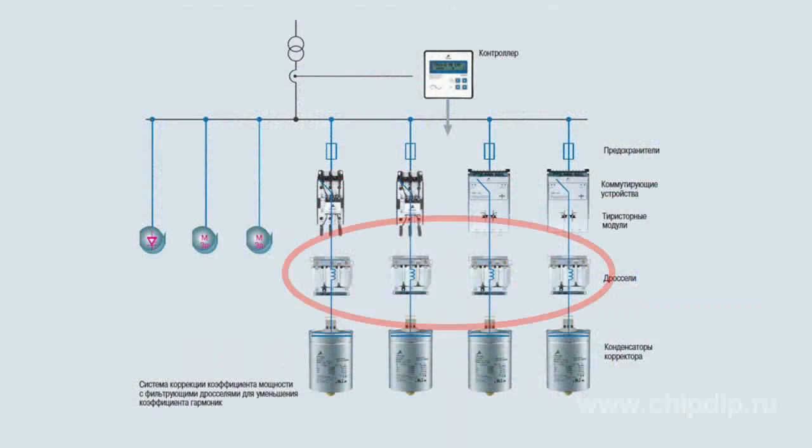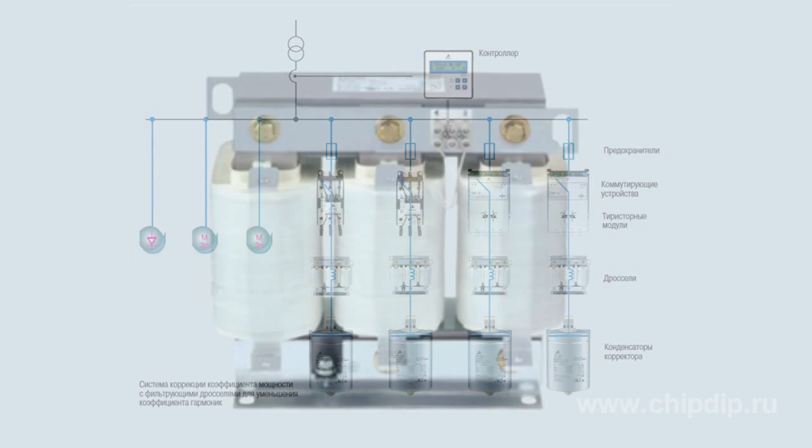Power distribution networks often experience harmonic distortions caused by the use of modern electronic devices that create a non-linear load. Harmonics can be quite dangerous for capacitors in correction circuits, especially if such capacitors operate at a resonant frequency. When a throttle is connected to the correction capacitor in series, the series resonance frequency can be adjusted, which helps avoid potential damage.